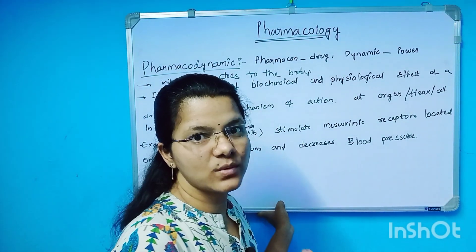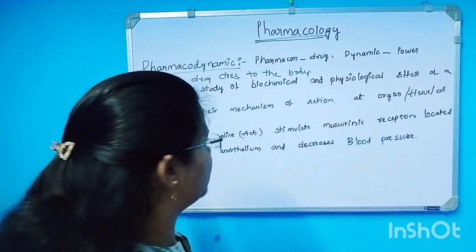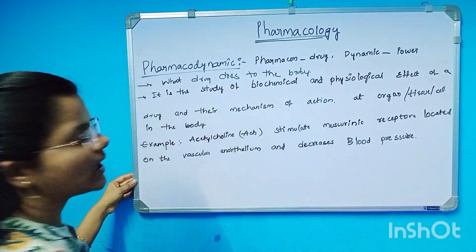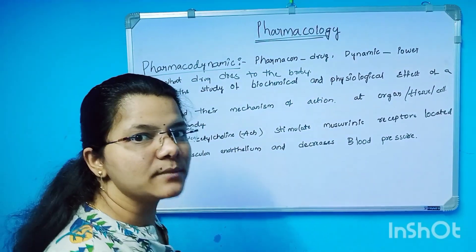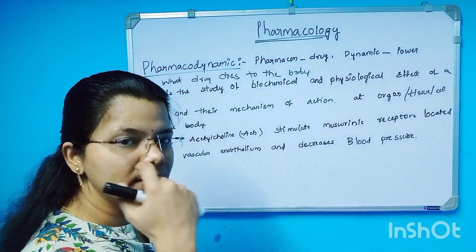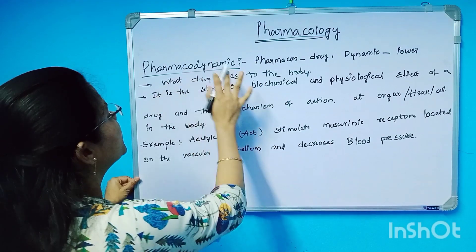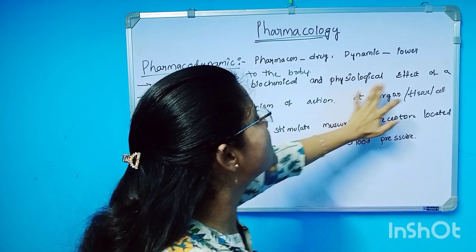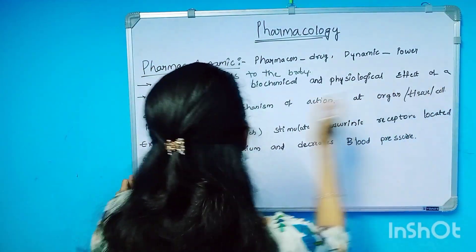It is called Pharmacodynamics — what drug does to the body. A drug is used to treat, prevent, or diagnose. Through what mechanism and through what effects it is creating, and what are the adverse effects of the drug — that completely is called Pharmacodynamics. It is the study of biochemical and physiological effects of a drug.